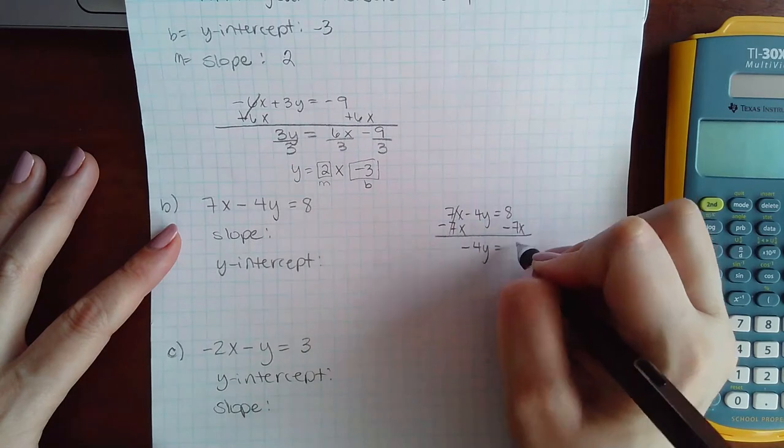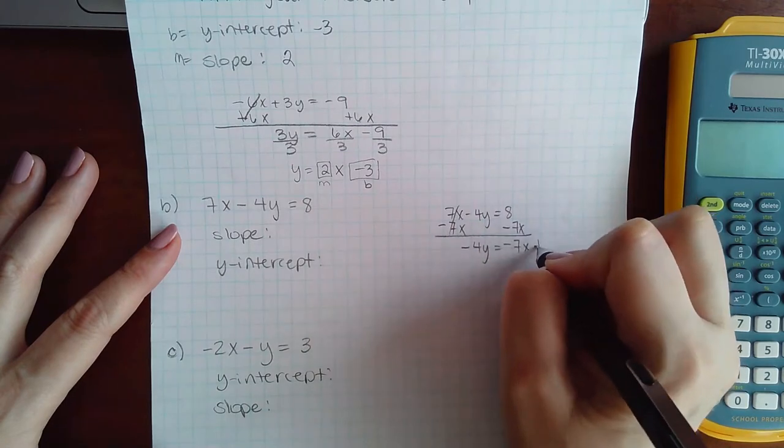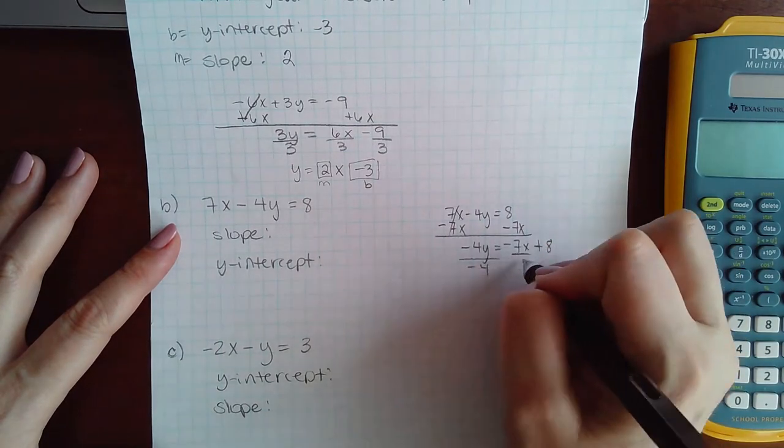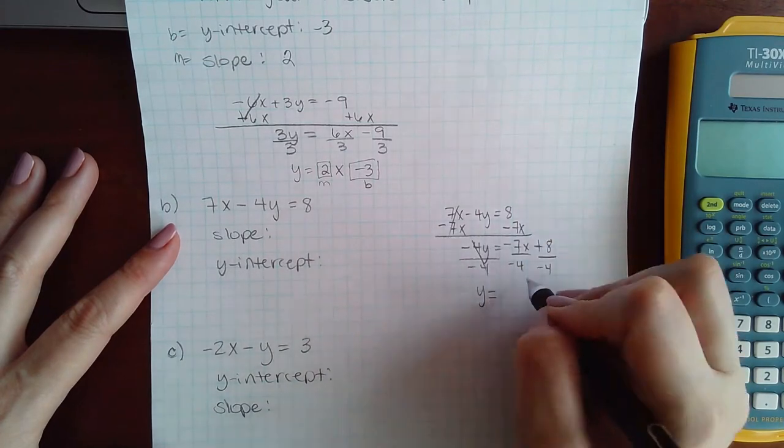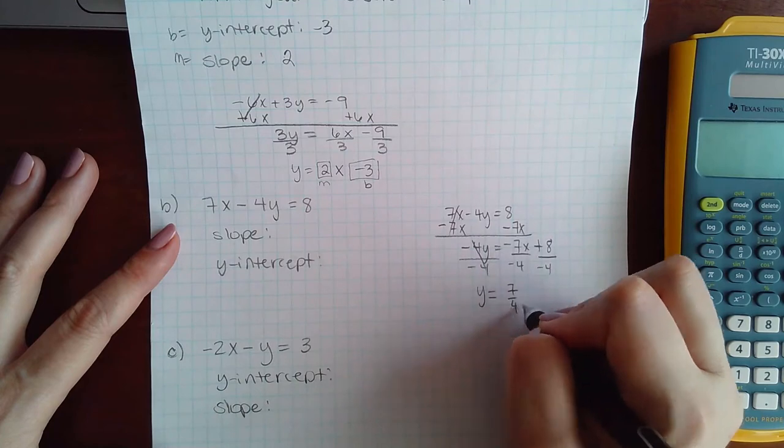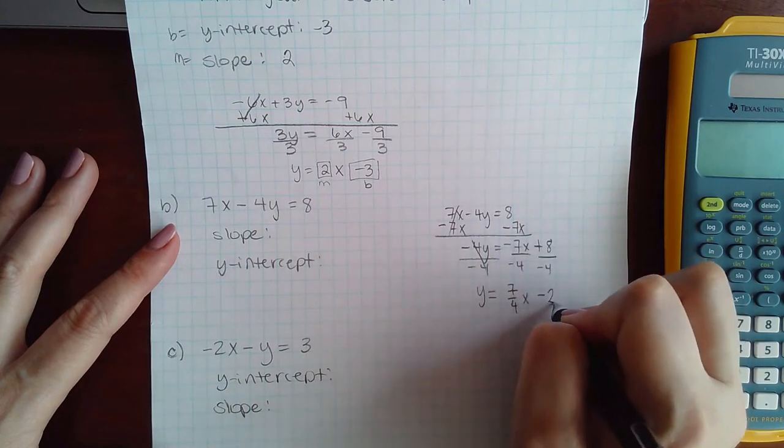So we have negative 7x and a positive 8. Then we're going to divide every term by negative 4 and we get positive 7 fourths x and a negative 2.